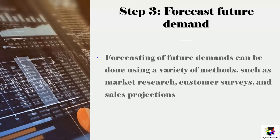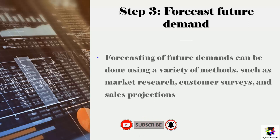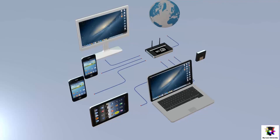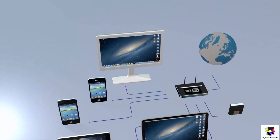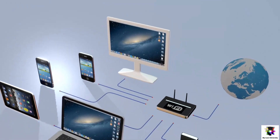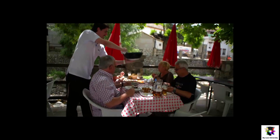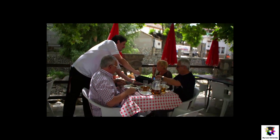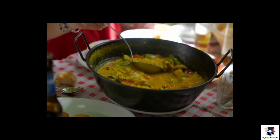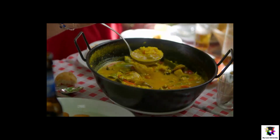Step number three is to forecast future demand. Once the current capacity of the business has been analyzed, the next step is to forecast future demand for products or services. This can be done using a variety of methods such as market research, customer surveys, and sales projections. For example, a manufacturing company may use market research to predict future demand for their products, while a service-based company may use customer surveys to understand the expected demand for their services.